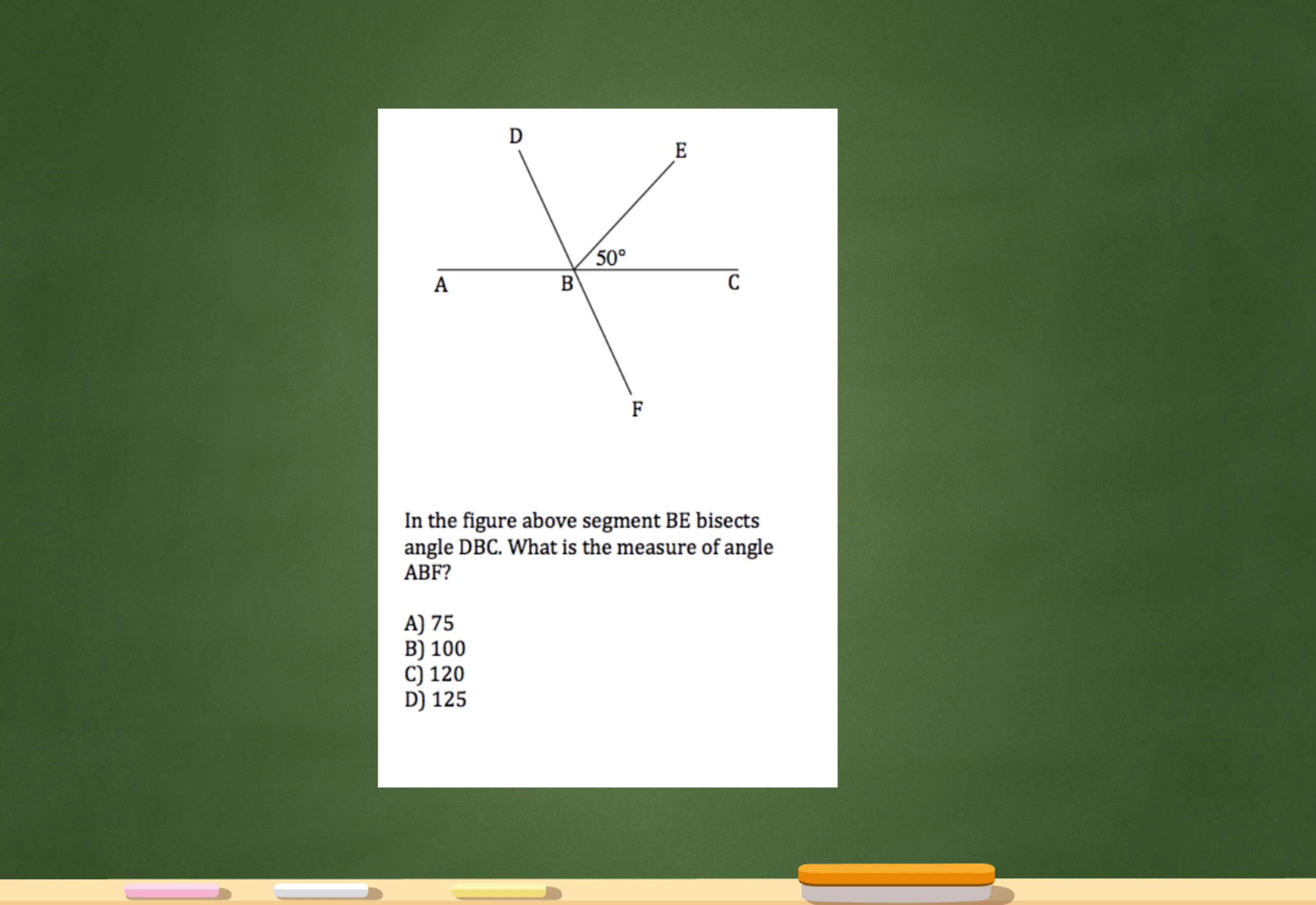Over here the problem is, in the figure above, segment BE bisects angle DBC. If something bisects something, what that means is it cuts it in half.